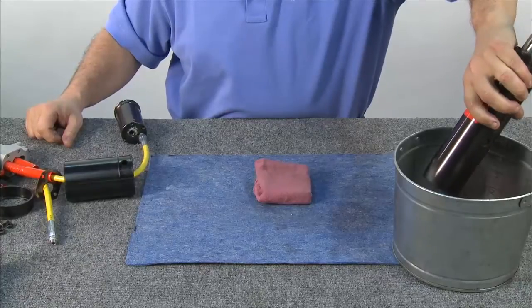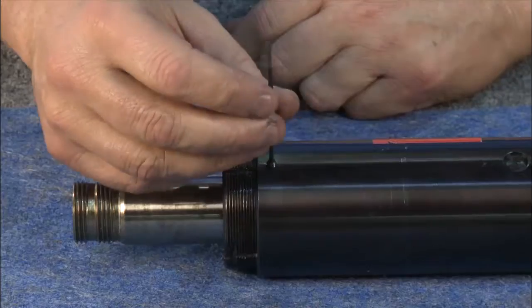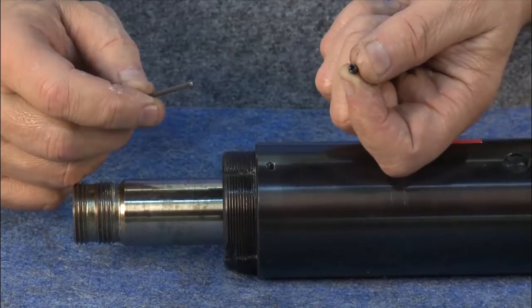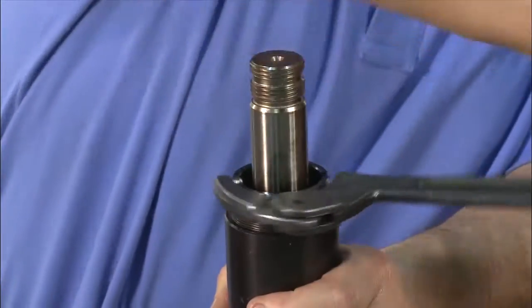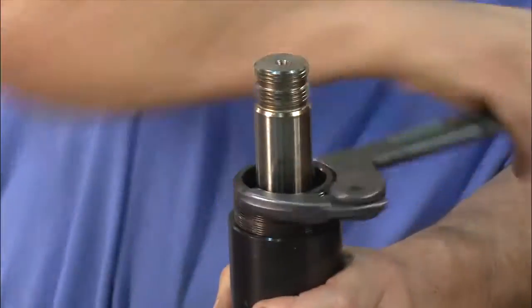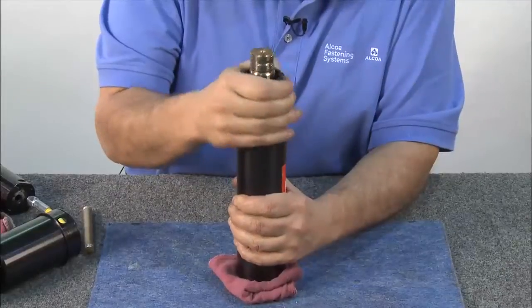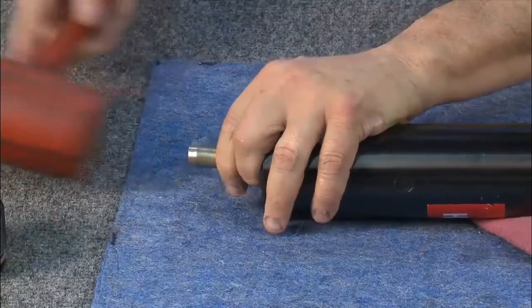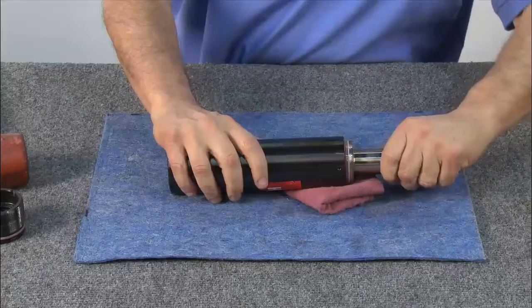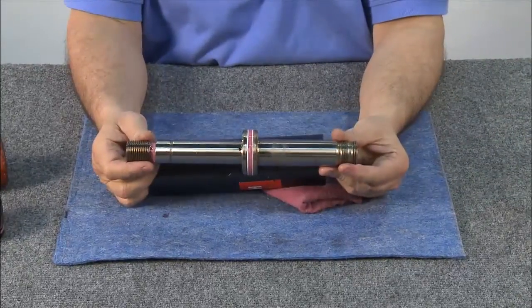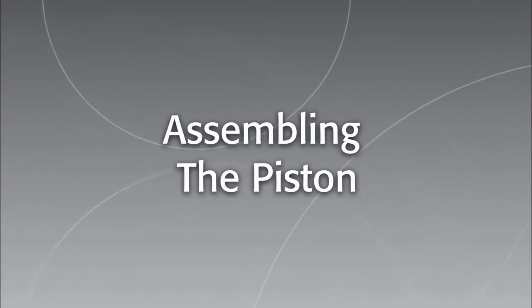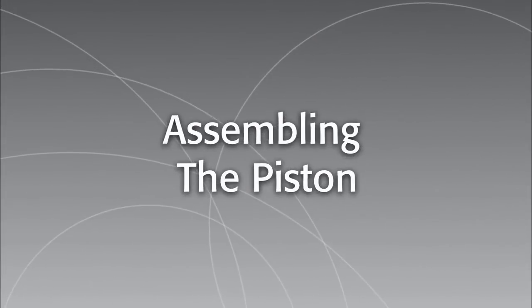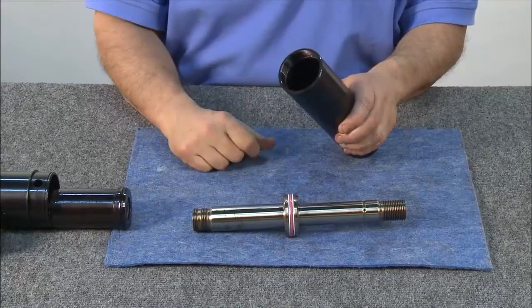Next, using an allen wrench, remove the front gland locking screw. Remove the front gland, then pull the front piston out of the cylinder. Now we'll reassemble the piston.